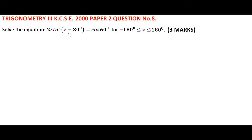Solve the equation 2 sine squared of x minus 30 degrees equals cosine of 60 for the range minus 180 degrees to 180 degrees. Let's rearrange our equation: 2 sine squared of x minus 30 is equal to cosine of 60, which is the same as 0.5.